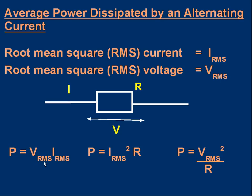...providing we use the RMS value of voltage and the RMS value of current, in which case we work out the average power automatically. The other formulas work the same way — for example, if you know the RMS voltage, the average power is V_rms² / R.